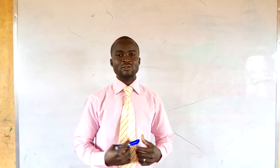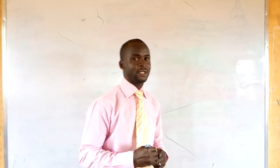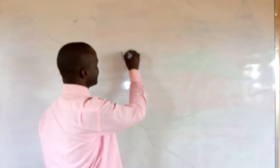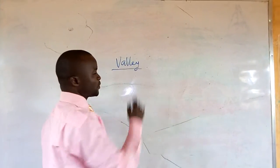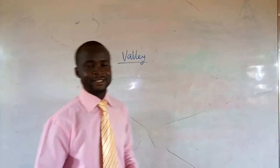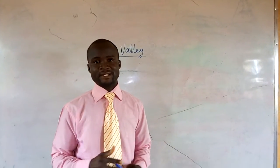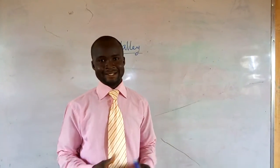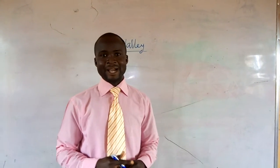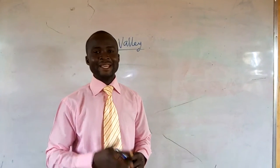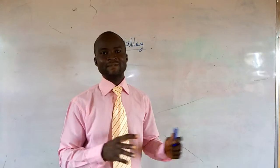Today we want to look at another contour representation of landforms that we call valley. A valley is just a space between two islands — a space between two hills. When a valley contains water, we call it a river valley.